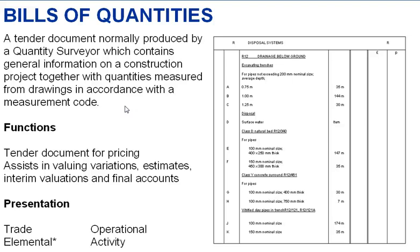So what is a Bill of Quantities? It's a tender document normally produced by a quantity surveyor which contains general information on a construction project, together with quantities measured from drawings in accordance with a measurement code. In Ireland, the general measurement code would be the ARM, the Agreed Rules of Measurement.